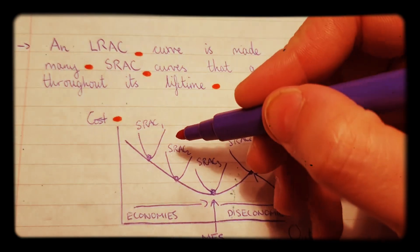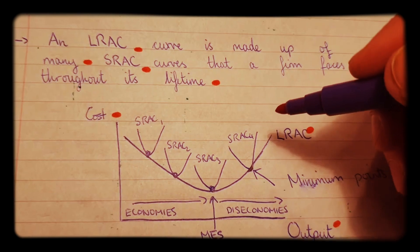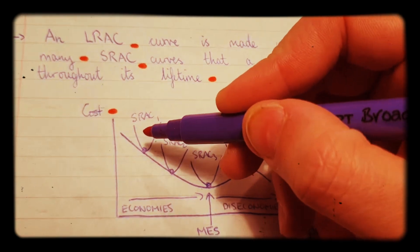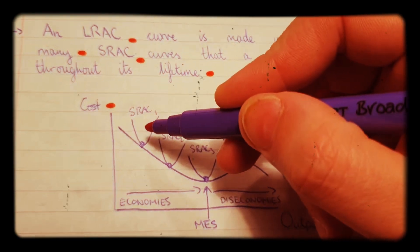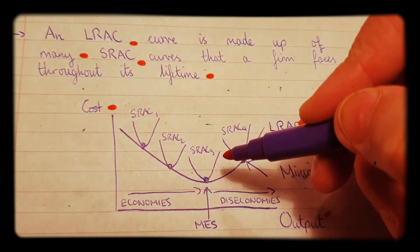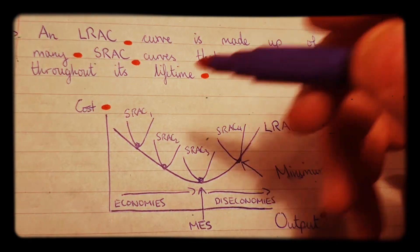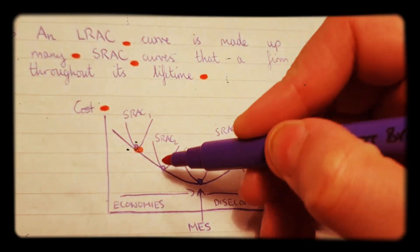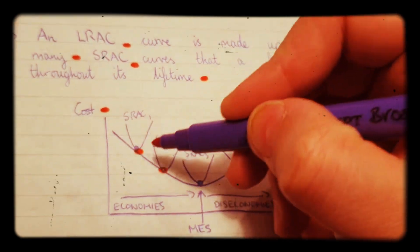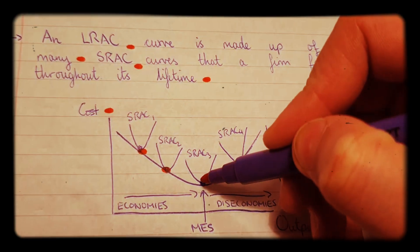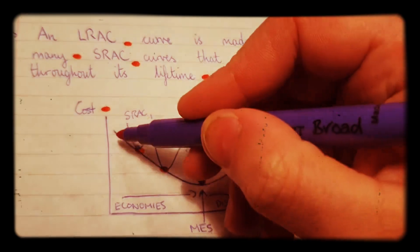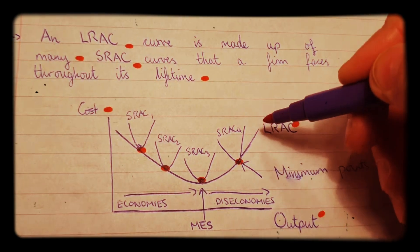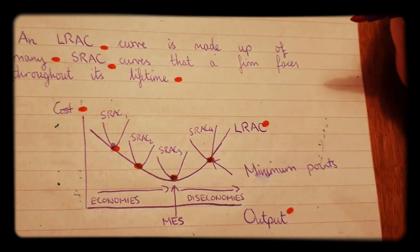As you can see, the long run average cost curve is a combination of all of the short run average cost curves that a firm faces and it's the minimum points of these curves. So when you put all these short run average cost curves together, if you join up the dots at the minimum points, you will get the long run average cost curve.